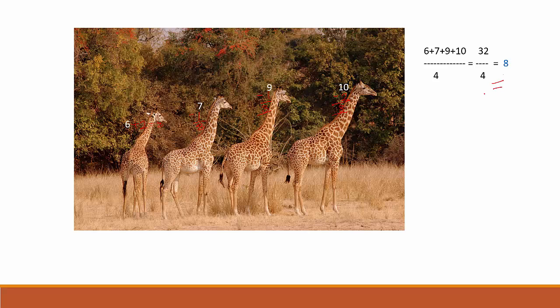If we pictorially represent this, the red line you see is the average height. As you can see, two giraffes are below the average height and two giraffes are above the average height.